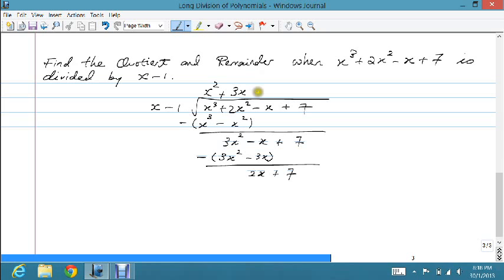All right, and then we can do it one last time. When I multiply x minus 1 by 2, I get 2x minus 2. All right, so 7 minus negative 2 gives me 9.